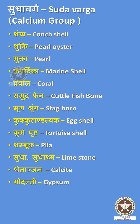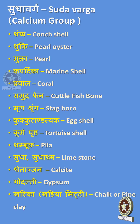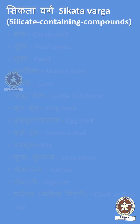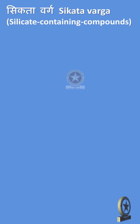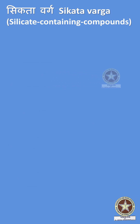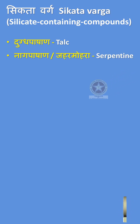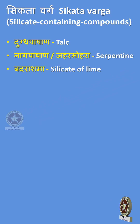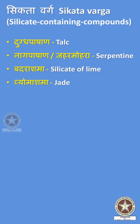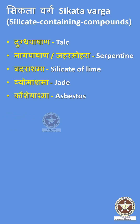Completing Sudha Varga: Godanthi (Gypsum) and Khatika (Chalk or Pipe Clay). Next comes the Sikata Varga, the Silicate group, which includes: Dugdapashana (Talc), Nagapashana (Serpentine), Vadarashma (Silicate of Lime), Vyomashma (Jade), Kaushayashma (Asbestos), and Akika (Agate).